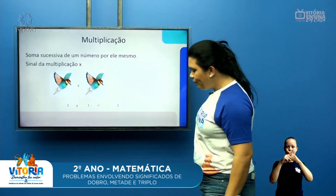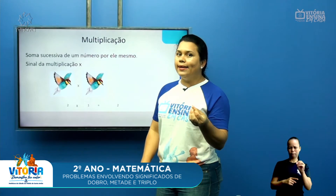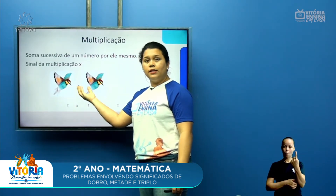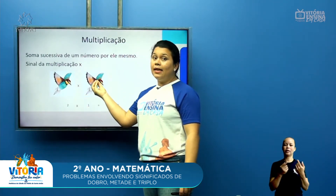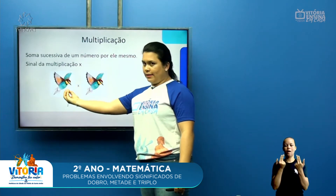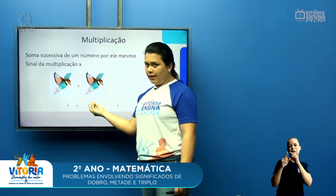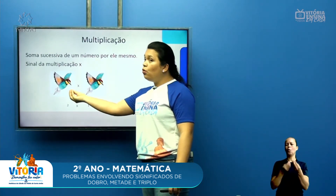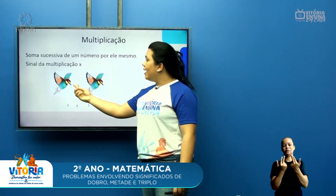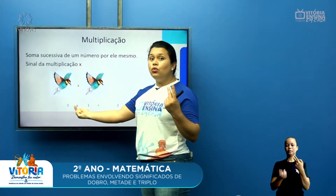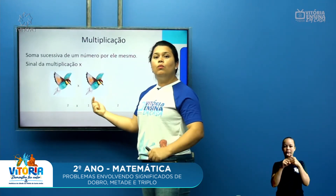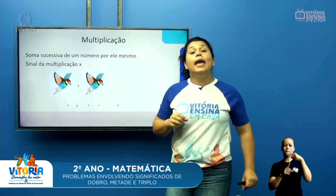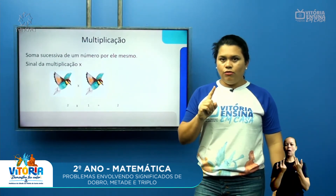A cruzinha é adição e o xizinho, multiplicação. Para provar que são parcelas iguais, eu coloquei um passarinho igual. Então, eu tenho um passarinho vezes um passarinho. Parcelas iguais: um passarinho mais um passarinho. Em multiplicação, como eu tenho duas figuras iguais, eles transformam em dois. Duas parcelas vezes um, que é igual. Duas vezes um, dois. Um mais um, dois. É o mesmo resultado.